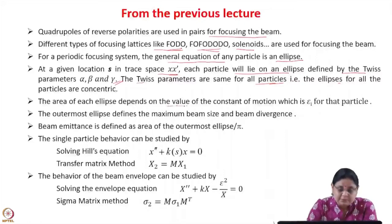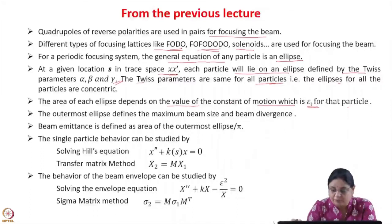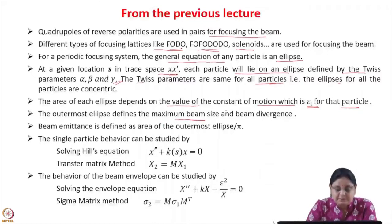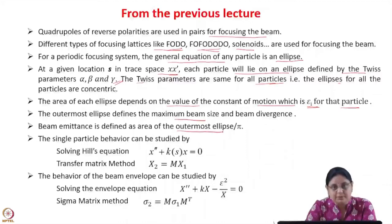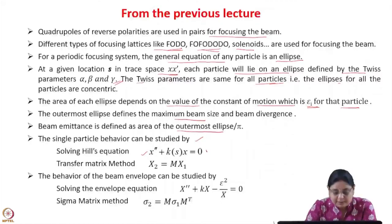The area of each ellipse depends upon the value of the constant of motion, which is epsilon_i for that particle. The outermost ellipse defines the maximum beam size and the maximum beam divergence. The beam emittance is defined as the area of the outermost ellipse divided by pi.